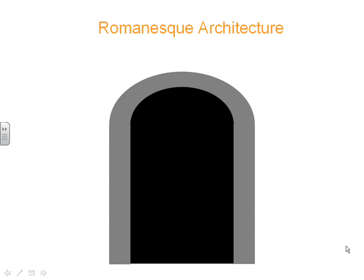During the Middle Ages, cathedrals were built in two types of architecture: first Romanesque, and then more Gothic architecture. So let's talk about the differences between these, and I have a graphic here to help us out.